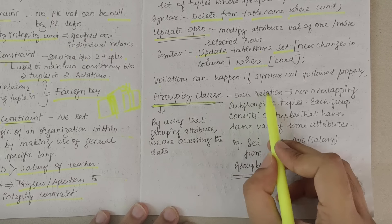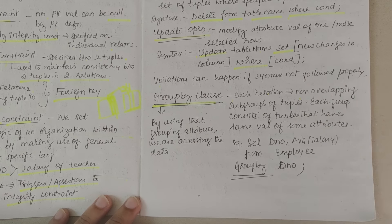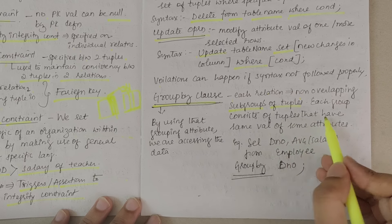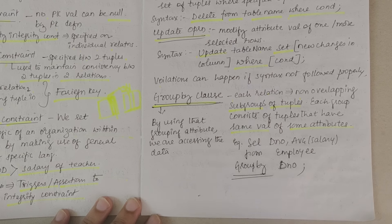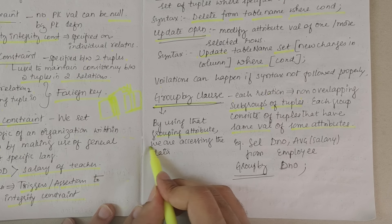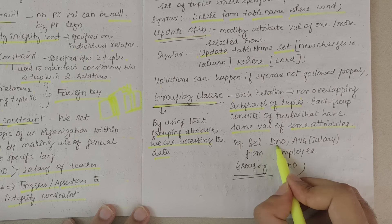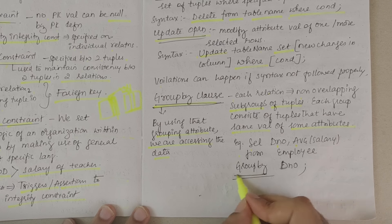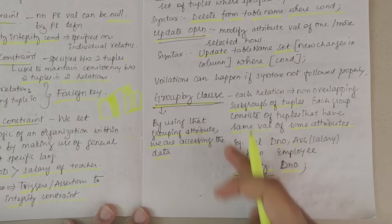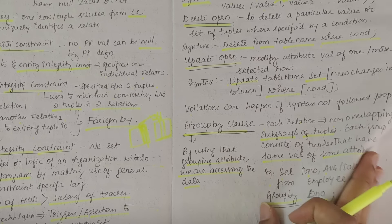Next we have the GROUP BY clause. In each relation where there is no overlapping, we can group tuples into subgroups. Each group consists of tuples that have the same value of the same attributes. For example: SELECT d_number, AVG(salary) FROM employee GROUP BY department_number. Whatever the output is, we are grouping it by department number.